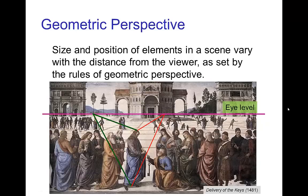Another strong visual cue for depth and distance is geometric perspective. This was established during the Renaissance and is very prevalent in paintings of that time. The characters in the foreground are larger in the visual field than characters farther away, but the proportional size is all established by the rules of geometric perspective. Drawing these perspective lines back to a vanishing point on the eye level or horizon gives us the correct sizing according to depth for persons in the scene.